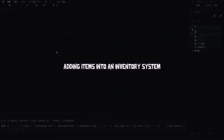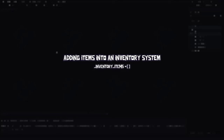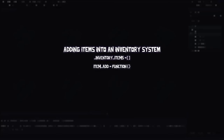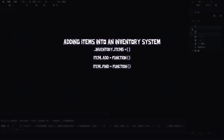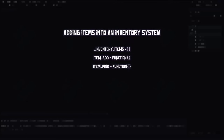Before switching over to GameMaker, let's talk about what it means to add an item into the inventory. First, we need an array to hold all our items — we can call this inventory_items. Next, we'll need a function called item_add to add and update items in the array. We'll also create item_find to locate existing items, and item_set to set a brand new item and its parameters.